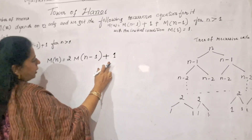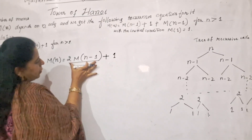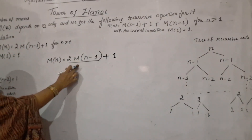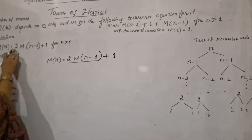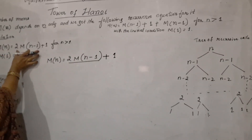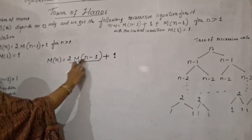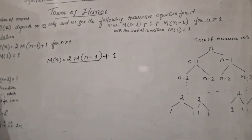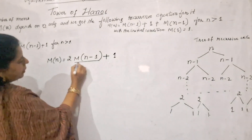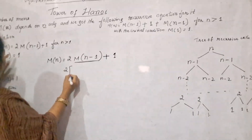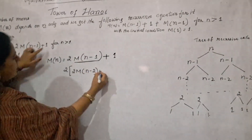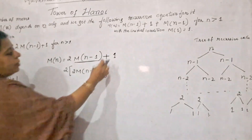Now we use backward substitution to simplify. For M(N) we write 2M(N-1) + 1. If we have to write for M(N-1), it will be 2M(N-2) + 1. So in place of M(N-1), I will be writing 2M(N-2) + 1, and the existing plus 1 will appear as it is.